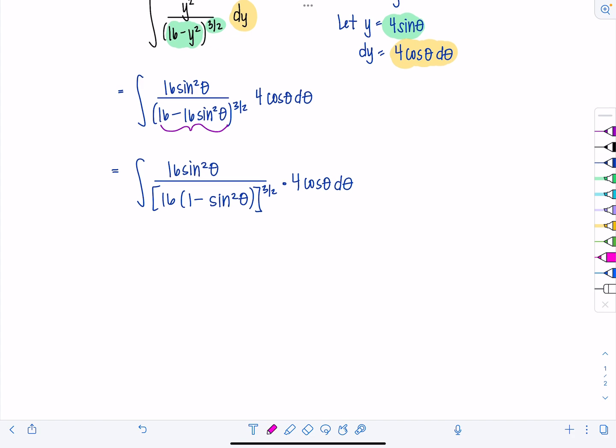I can tell right off the bat, I'm going to replace this one minus sine squared theta with cosine squared theta. And then just to clean things up, let's take this four and 16 outside of the integral. So we've got a 64 sitting outside. And then sine squared theta, cosine theta, I'm moving this guy so they can hang out together over 16 cosine squared theta. And that's all raised to the three halves power. Don't forget that d theta.